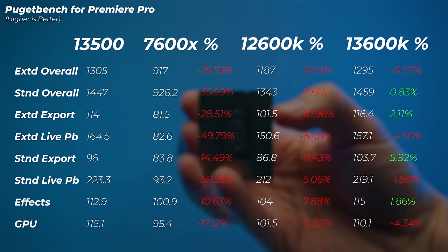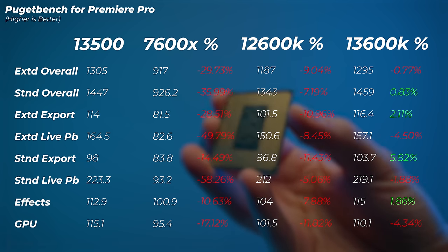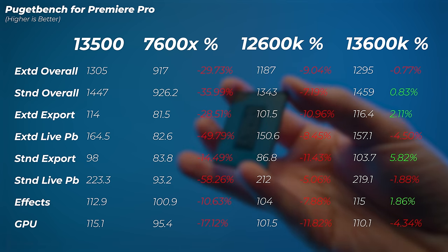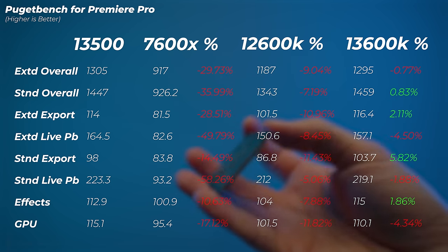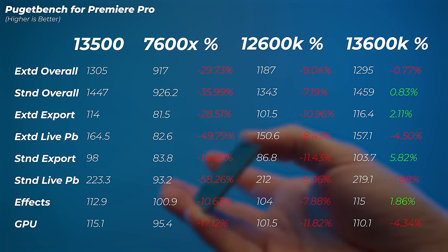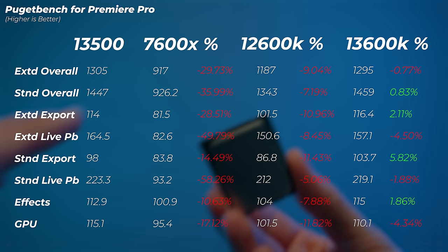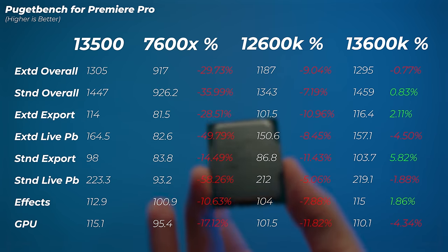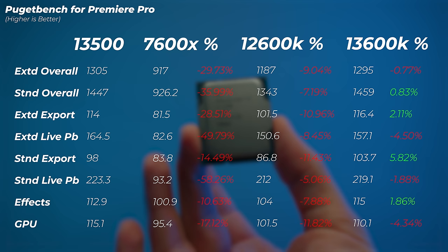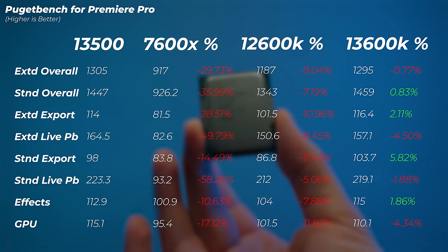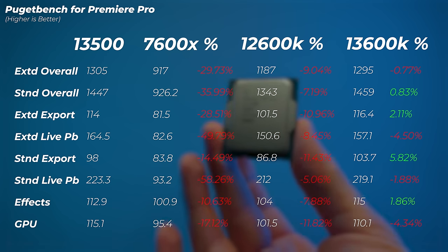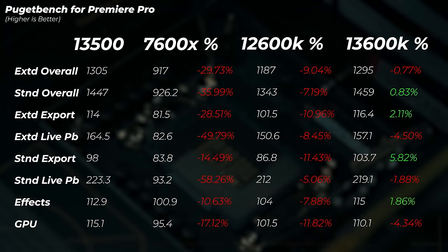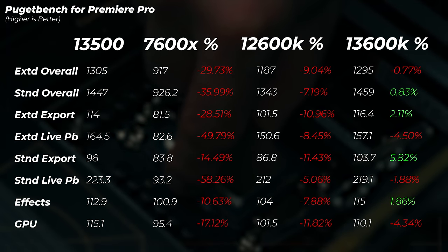In Premiere Pro — the bread and butter of these Intel CPUs — the 7600X at the same price is 30% slower on the extended overall score and 36% slower on the standard overall score. Most notably, the standard live playback score is about 60% slower on the 7600X, meaning the 13500 is more than twice as fast. The 12600K is about 7–10% slower. Strikingly, the 13600K performs almost identically to the 13500 in Premiere Pro — actually losing slightly on the extended overall score — highlighting how strong the 13500's media engine is.